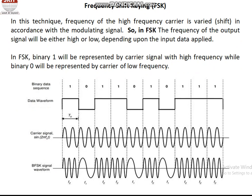In FSK (Frequency Shift Keying), the frequency of the carrier shifts according to binary 1 and 0. The frequency of the output signal will be either high or low depending on the input: if the input is 1, the frequency of the carrier is high, and if the input is 0, the frequency shifts to a lower value. As observed from the waveform, for input 1 the cycles are close together (high frequency), and for input 0 the time period is longer (low frequency).